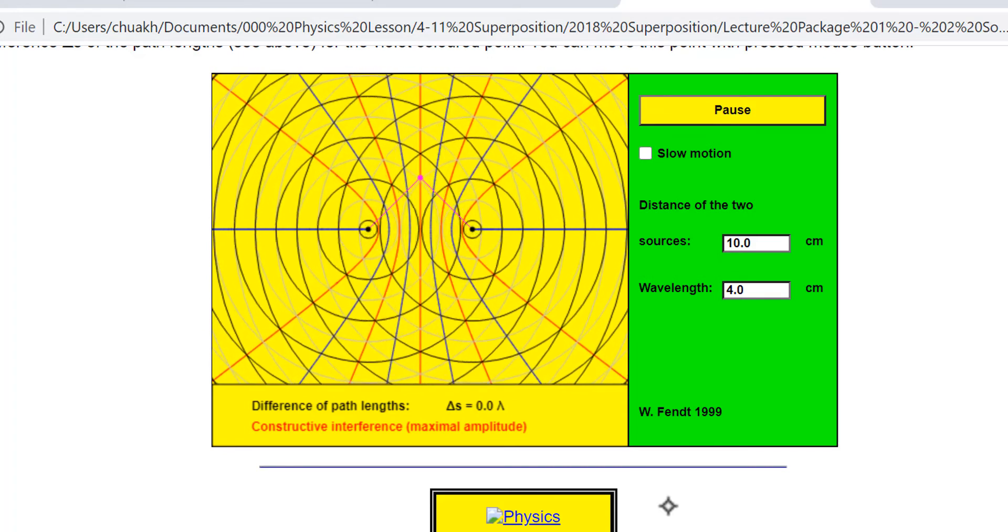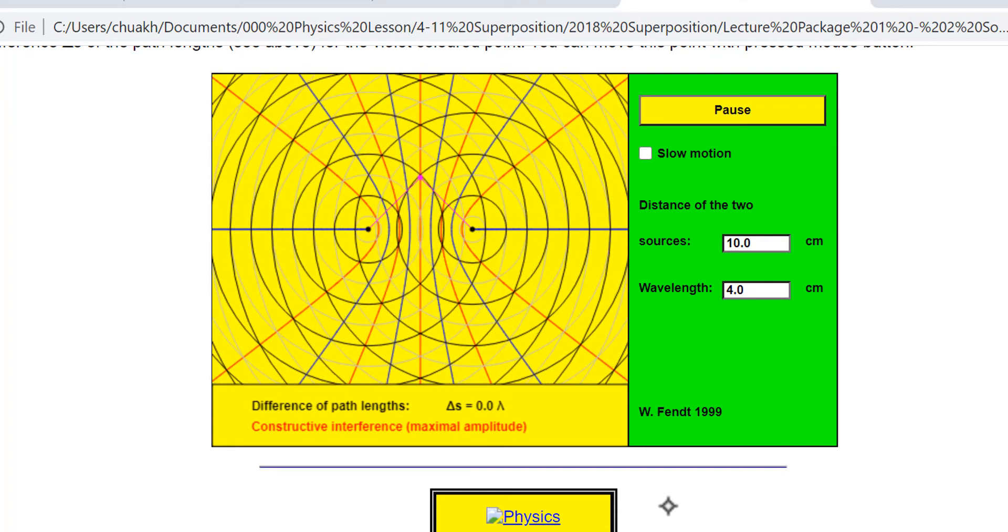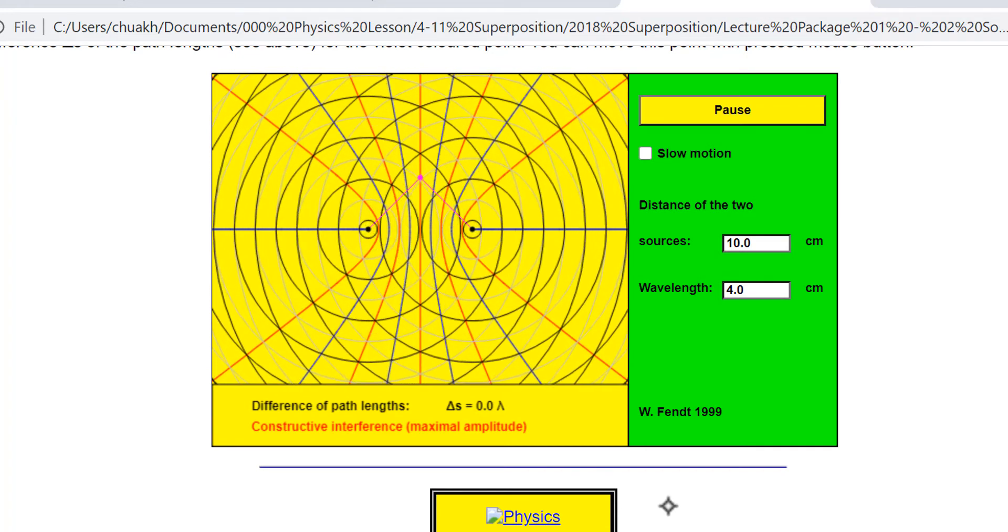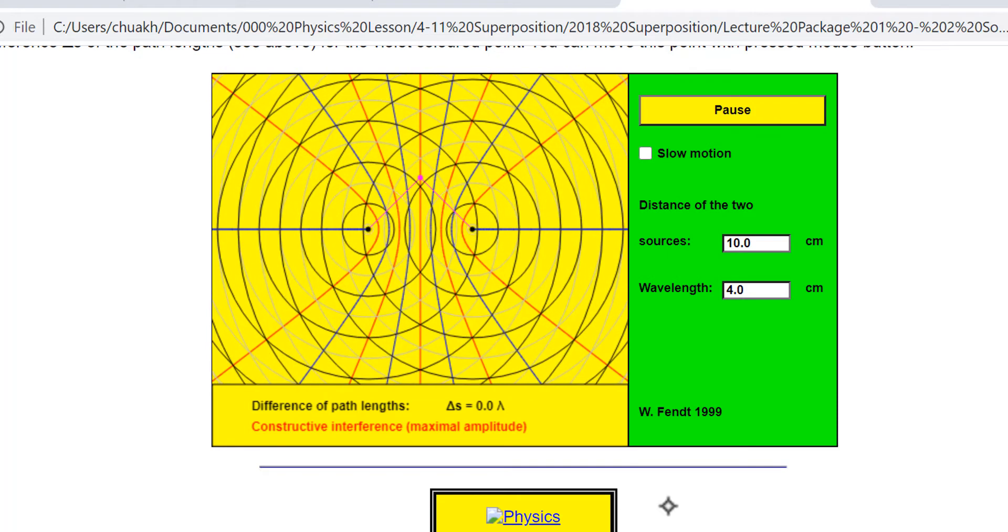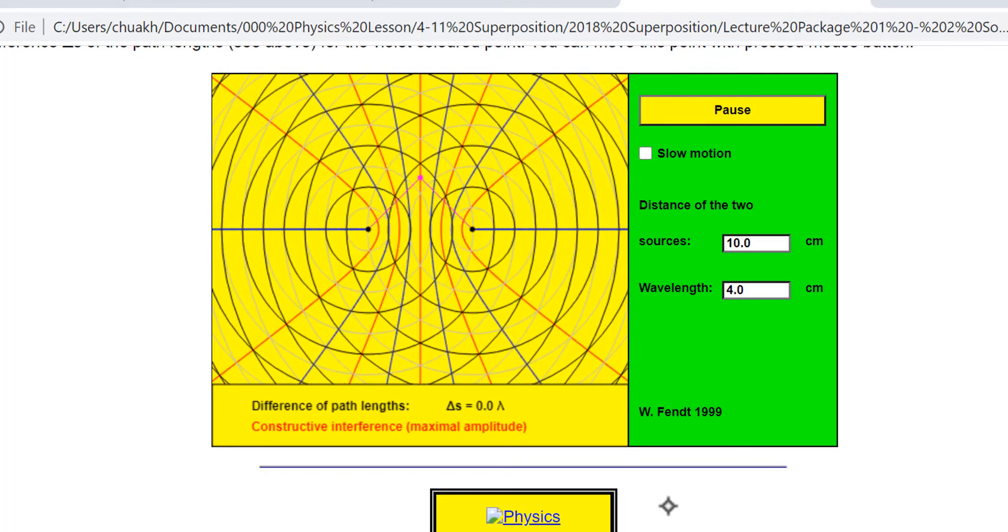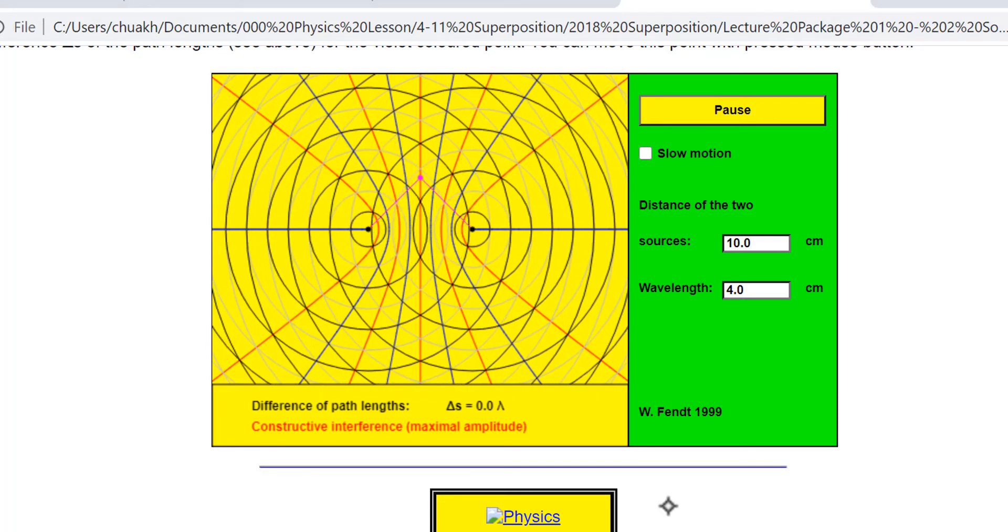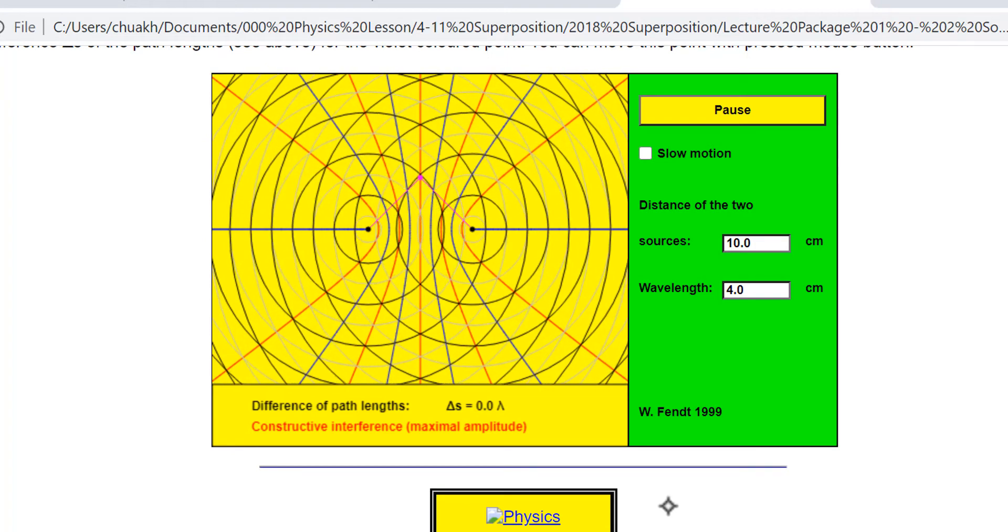And it's not just the two crests intersecting. We also have two troughs. Two troughs intersecting and moving up. So at this point, you have both crest meeting crest and trough meeting trough.